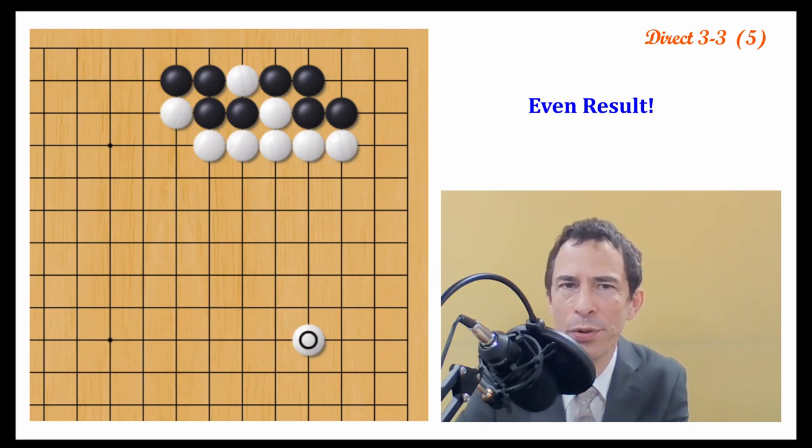We were surprised with the computer analysis when we started having AIs that were stronger than professionals. And they were giving black a better score than we expected. But I would call this about even. So it's playable for both sides.